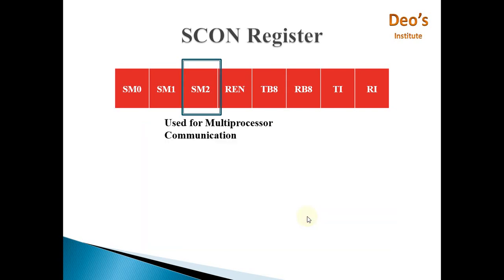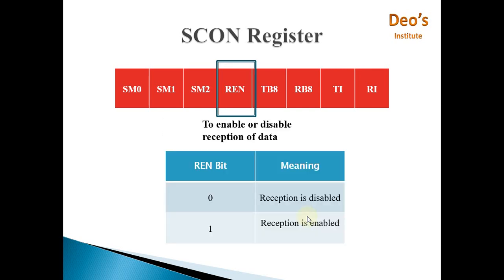The SM2 bit is used for multiprocessor communication. Next is the REN bit, which enables or disables reception of data. The 8051 microcontroller can enable or disable the reception pin. If REN is 0, reception is disabled; if REN is 1, reception is enabled. We can use software instructions to set or reset the REN bit.